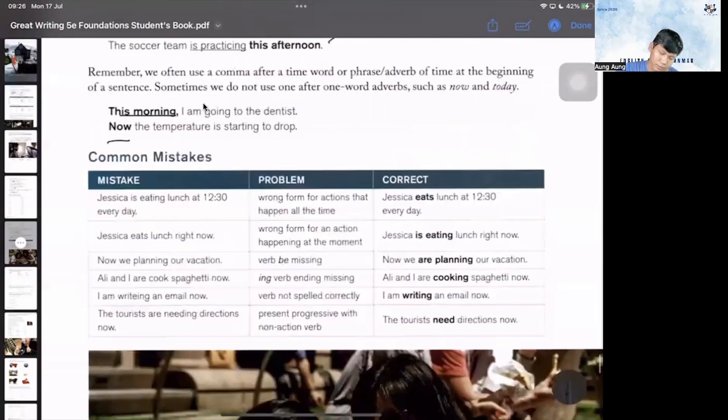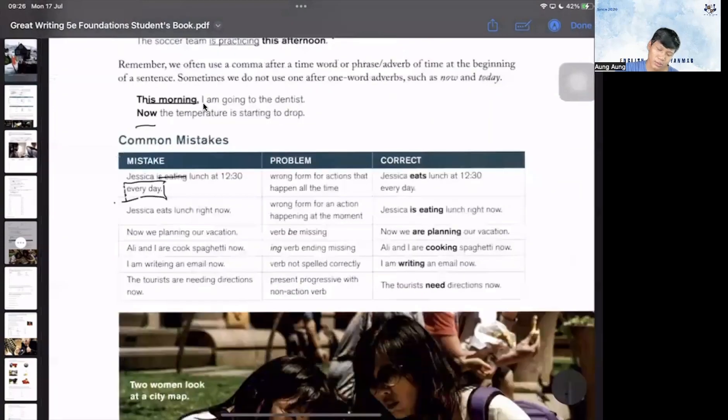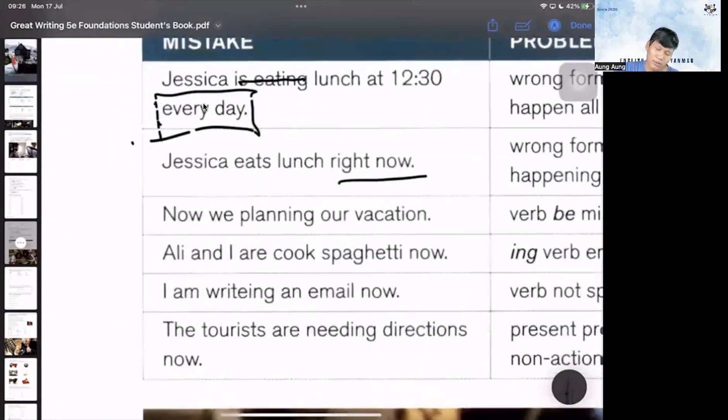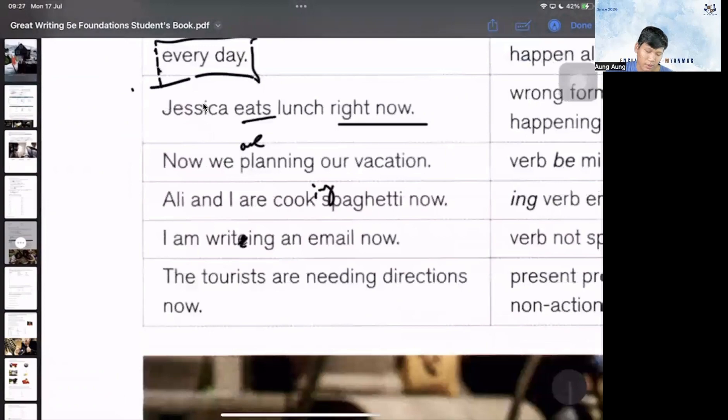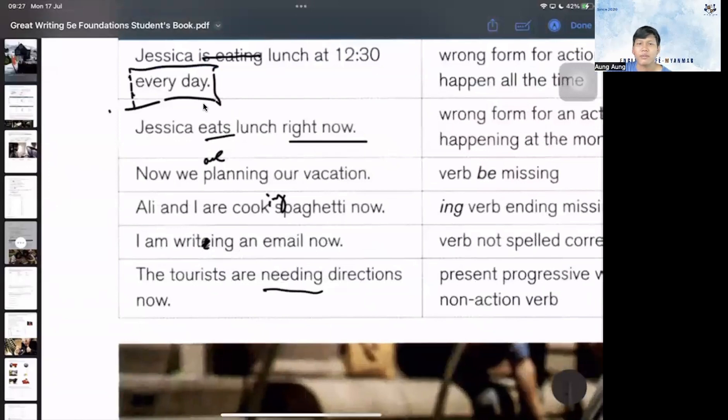Common mistakes. Jessica is eating lunch at 12:30 every day. Every day means this is a habit, not happening right now, so we use present simple. Jessica eats lunch, not is eating. Now we have lunch right now, so we use is eating. Now we are planning. Ellie and I are cooking spaghetti now. I am writing an email now. The tourists are needing directions - but need is a state verb, so we don't use continuous with it.